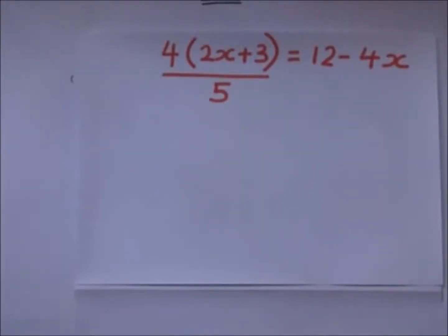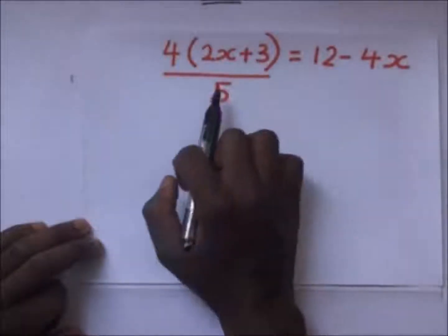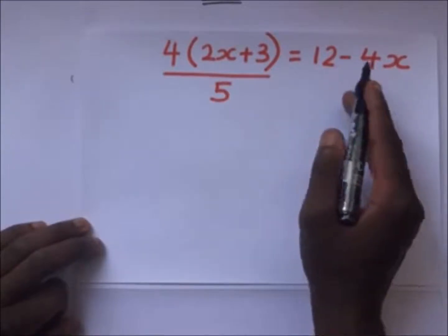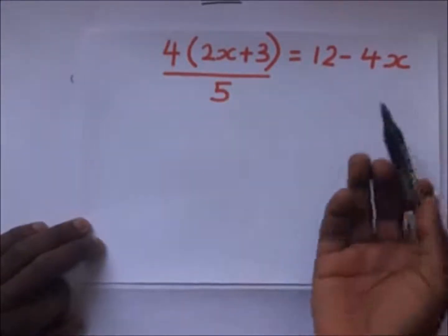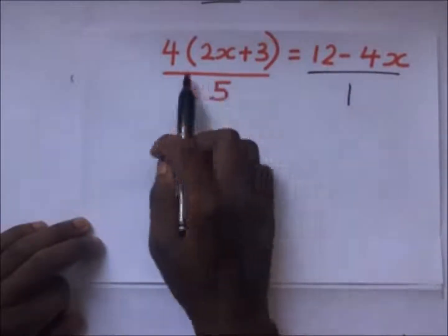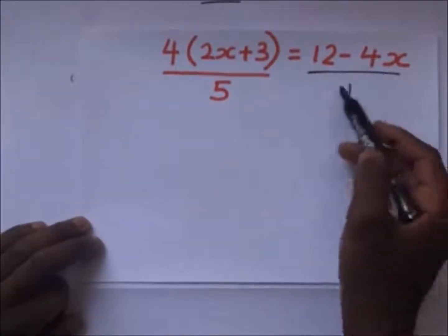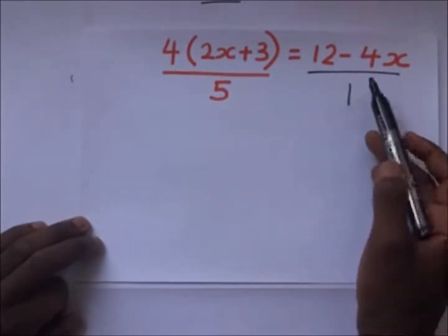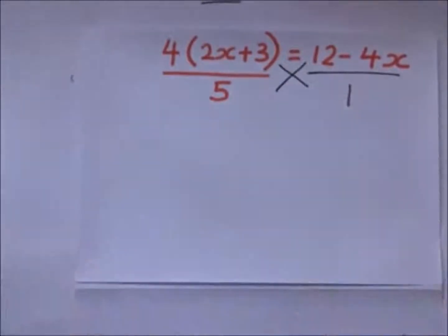In trying to simplify this number, we have 4 into (2x + 3) divided by 5 is equal to 12 minus 4x. This is an algebraic equation and we are required to find the value of x. Since we have a fraction on one side, we make the other side also over 1, then to get a flat equation we cross multiply.